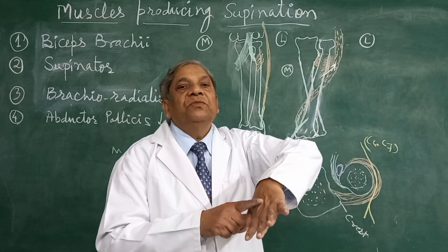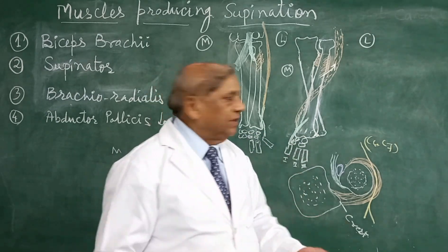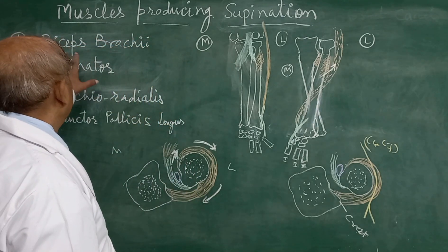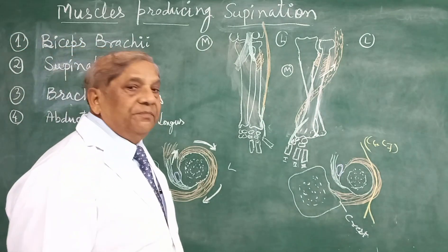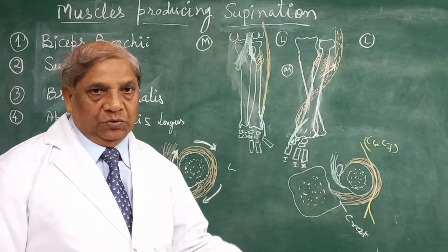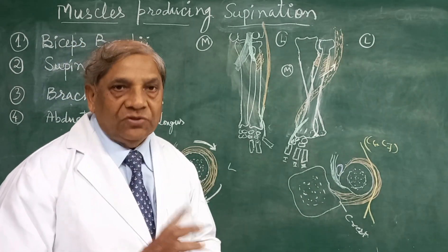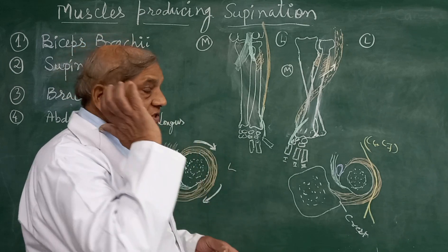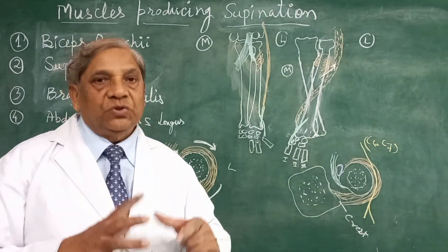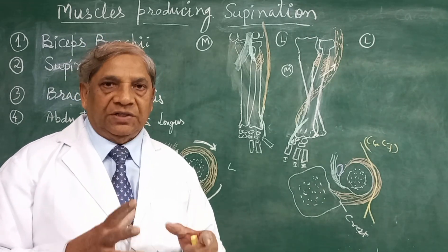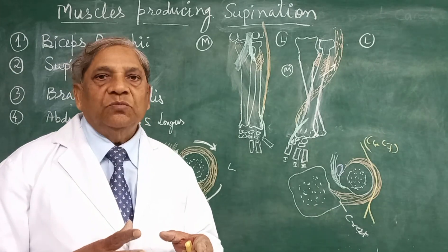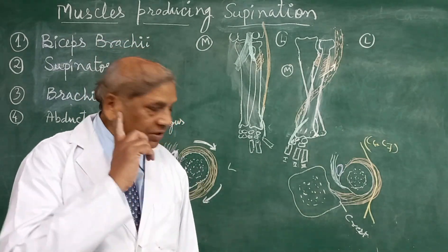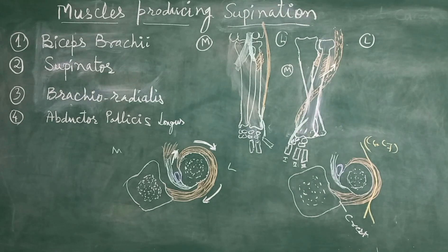Thus these four muscles produce the movement of supination from the pronated position. Remember that not only biceps and supinator, but two other muscles — brachioradialis and abductor pollicis longus — are also helping in producing the supination movement. This completes the muscles responsible for both pronation and supination movement, and how these movements take place. Thank you very much for watching this video.